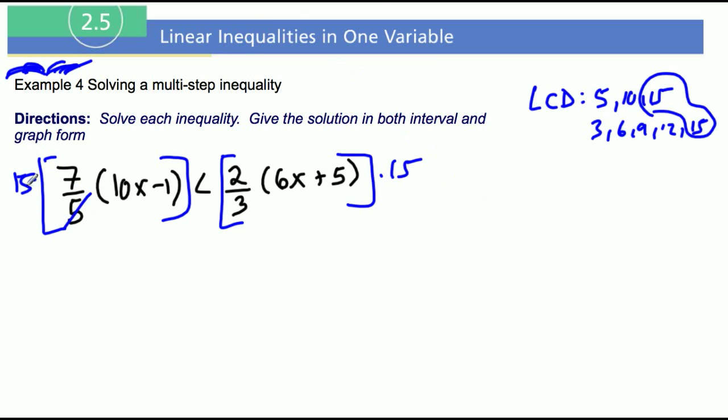5 goes into 15 three times, so really we only have 3 times 7, so really we have 21 times (10x - 1). Bam, that's what the entire left side just became. So 5 goes into 15 three times, so 3 times 7 is 21, that's what we get right there.